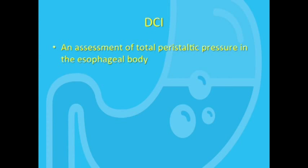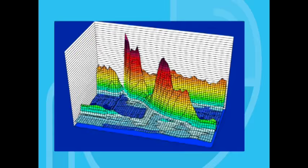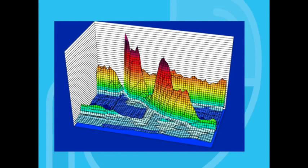Let's talk about the distal contractile interval. What is the DCI? The DCI is an assessment of the total peristaltic pressure down the length of the esophageal body, and if you take one of our topographical plots, which is a view from the top, and if you actually turn it slightly on its side so that you see the three axes, that is x, y, and z, as in this slide,